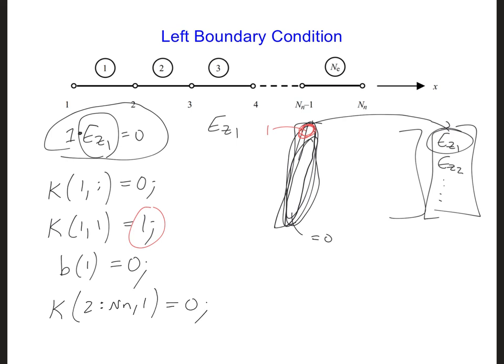Now since the ez field at node 1 is known, we could even completely eliminate ez1 from the global system of equations. This would reduce the size of the matrix equation because we could just get rid of the top row of the equation and also get rid of the left column of the k matrix. This would make the code more computationally efficient.